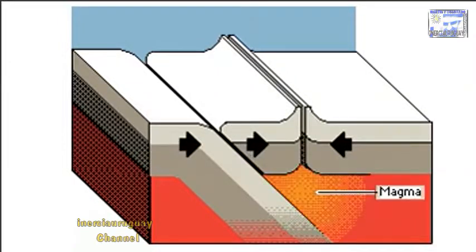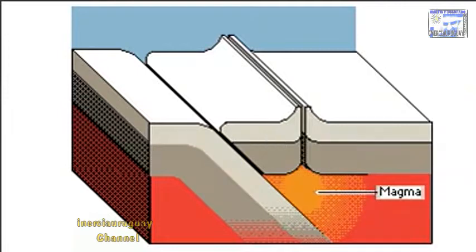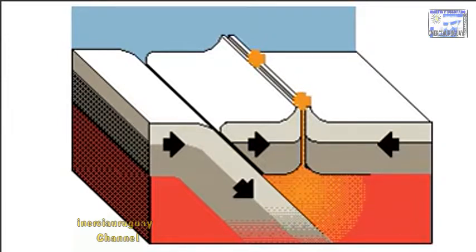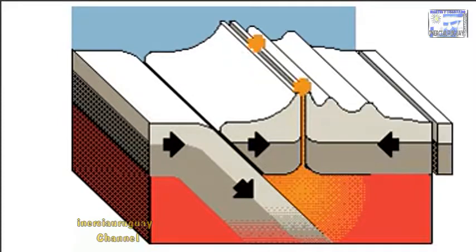As oceanic crust dives beneath continents, it melts, forming liquid rock, or magma. Sometimes this magma seeps to the surface and bursts out, forming volcanoes.